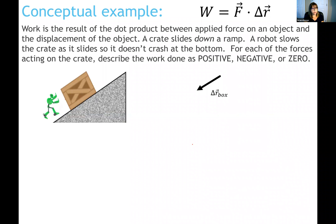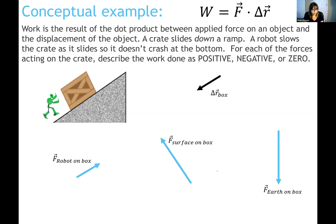In physics, the most common use of the dot product is the definition of work: work is the dot product between a force vector and a displacement vector. Consider a crate sliding down a ramp with a robot pushing on it, a normal force from the ramp surface, and gravity pulling it down. To find whether the work done by each force is positive, negative, or zero, translate the displacement vector to be tail to tail with each force vector.